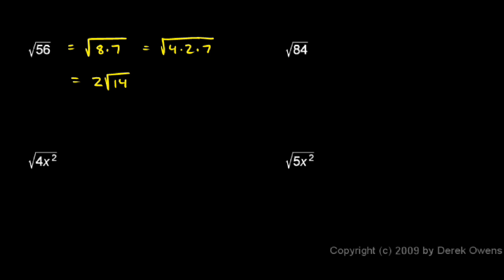The square root of 84, 84 is 2 times 42. So I'll write the square root of 2 times 42. And 42 is 2 times 21. So I have the square root of 2 times 2 times 21.